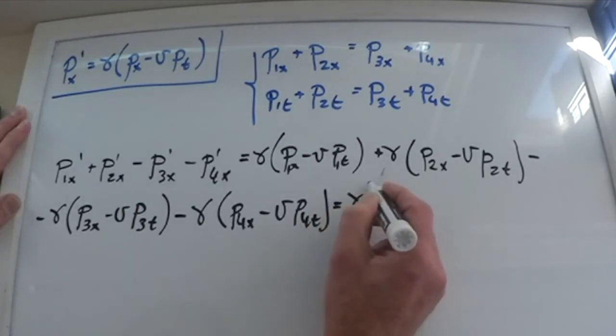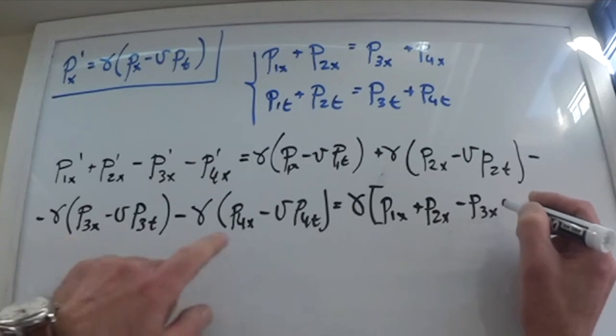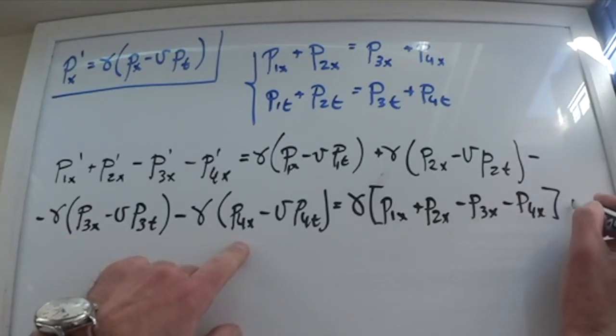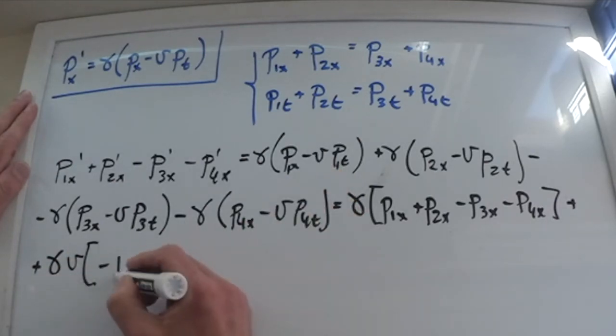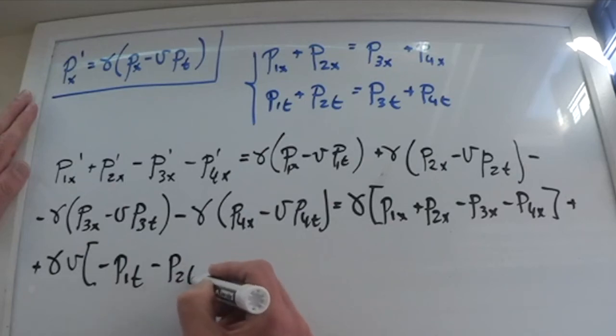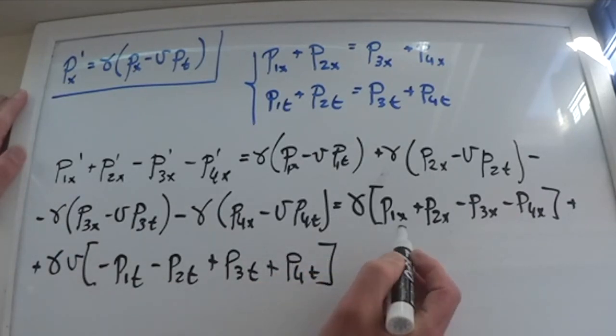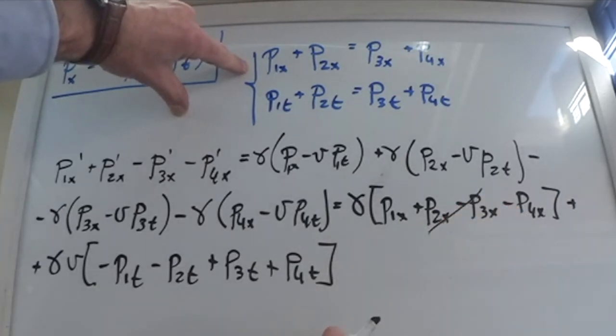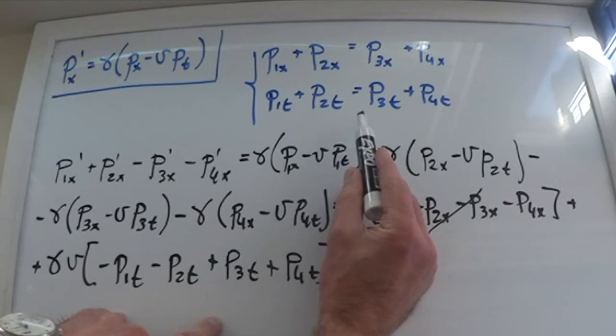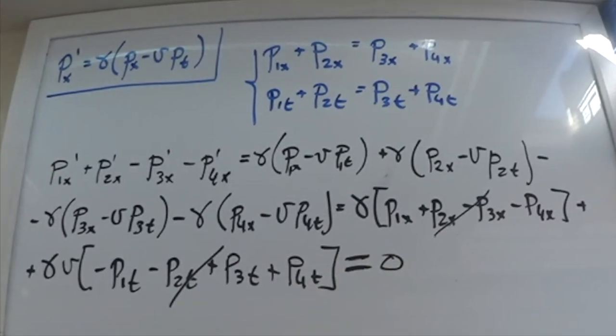Now I'm gonna group everything that has this gamma, so p1x plus p2x minus p3x minus p4x. And now here I'm gonna group everything that has gamma and velocity, so gamma velocity bracket, this is negative p1t minus p2t minus and minus that is positive p3t and positive p4t. Now look at this bracket, this is just a conservation of the x component of the relativistic momentum in the s reference frame which we know that is conserved. And this is just the conservation of the t component of the relativistic momentum in the s reference frame which we know that is conserved.